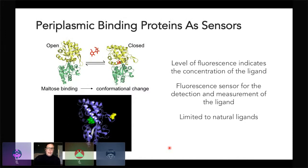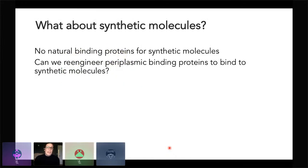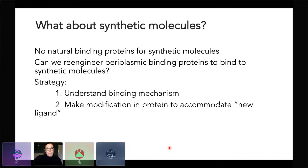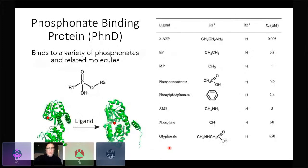A fluorescence reporter added to the protein changes fluorescence upon conformational change, indicating ligand binding. By monitoring fluorescence levels we can determine ligand concentration in a sample. However, this is limited to the natural ligands of these PBPs — monitoring maltose concentration is not very environmentally relevant. The question becomes: can we re-engineer PBPs to bind synthetic molecules of interest? That requires understanding the binding mechanism first, then making appropriate modifications.